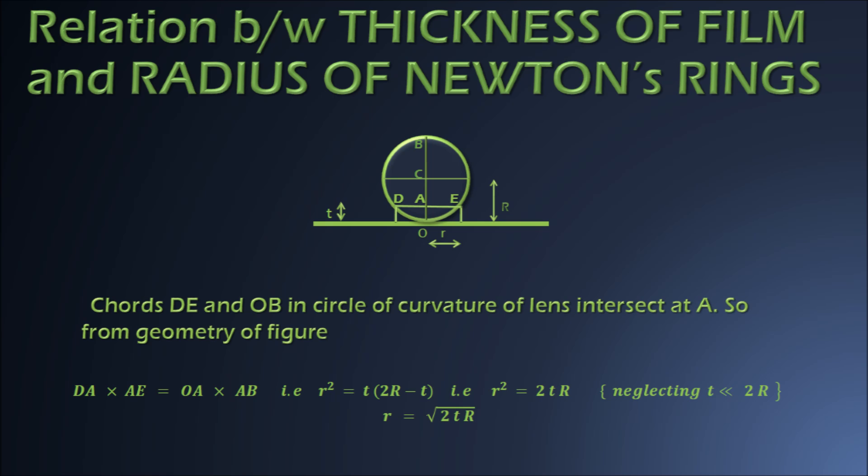As is clear from the diagram, chords DE and chord OB in the circle of curvature of the lens intersect at point A. From the geometry of the figure we can write: DA multiplied by AE equals OA multiplied by AB. DA and AE are nothing but the radius r of the Newton ring, OA is the thickness of the air film corresponding to radius r, and capital R is the radius of curvature of the plano-convex lens. Using these values we get an important relation between the radius of a Newton ring and the thickness of the corresponding air film.